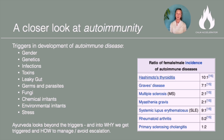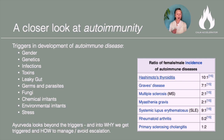Every autoimmune disease will have some degree of intestinal permeability — which is what leaky gut is. Because you have a leaky gut, the autoimmune disease cannot be healed. Some people look at leaky gut as the root cause of autoimmune disease. Ayurveda says it's a consequence of a bigger root cause that has been triggered into motion, which we will discuss shortly. But it is the place from which, when we fix it, we can start reversing autoimmune disease.